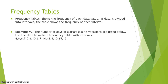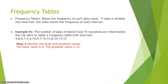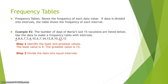The next type we'll look at is frequency tables, which show the frequency of each data value. If data is divided into intervals, the table shows the frequency of each interval. Our example: the number of days of Maria's last 15 vacations. The first step is to identify the least and greatest values — here, the least is 4 and the greatest is 15.